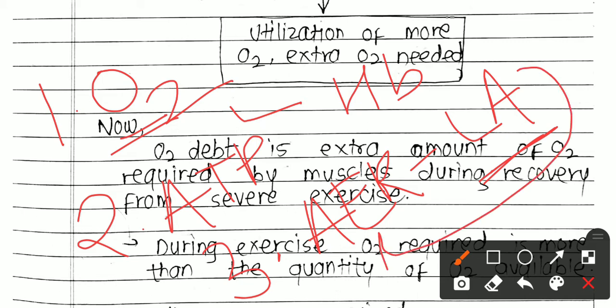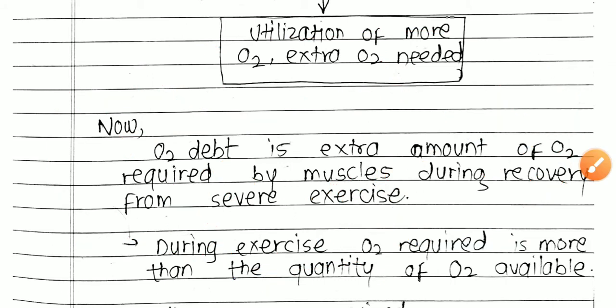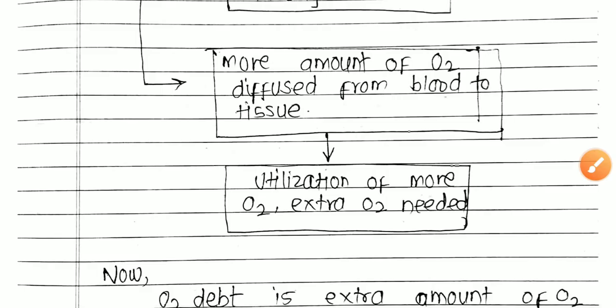For these processes - for dissociation with hemoglobin, for lactic acid conversion into glucose, and for all these activities - there is a need for oxygen. This extra need of oxygen is actually oxygen debt. Now what is actually going to happen during exercise?